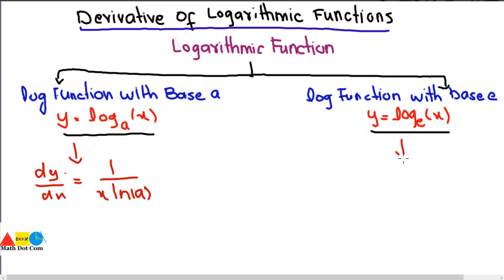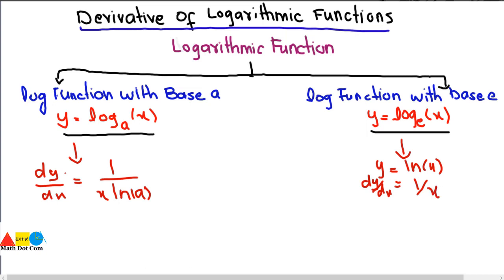In case the base is E, this base E function is the same as the natural log function. So Y equals natural log of X, and dy/dx of natural log of X is 1 divided by X. This is the derivative of the function with base E.